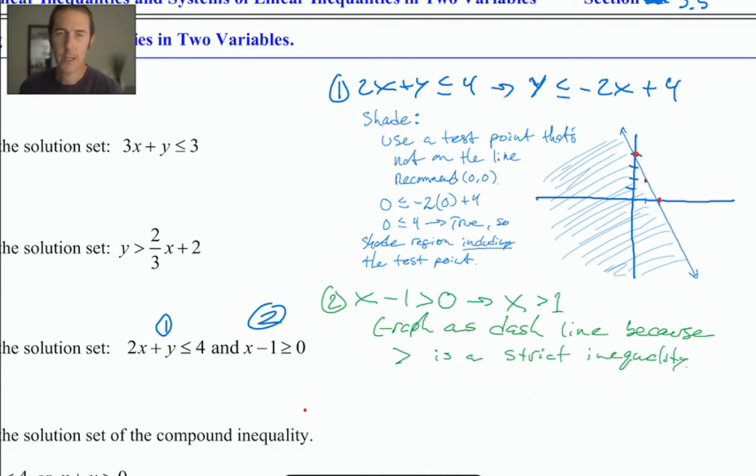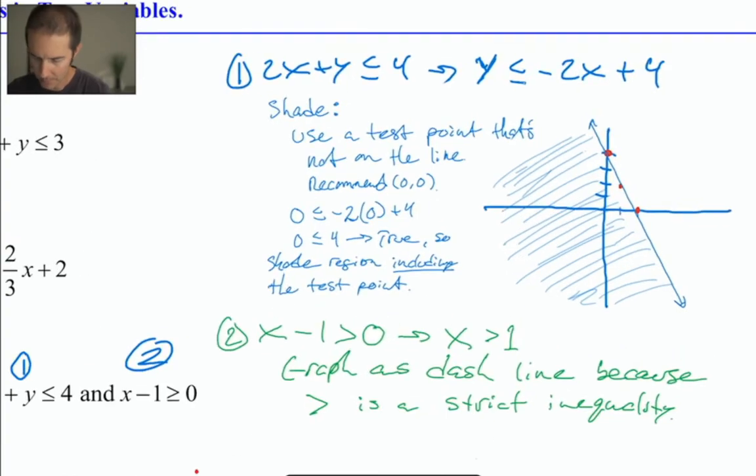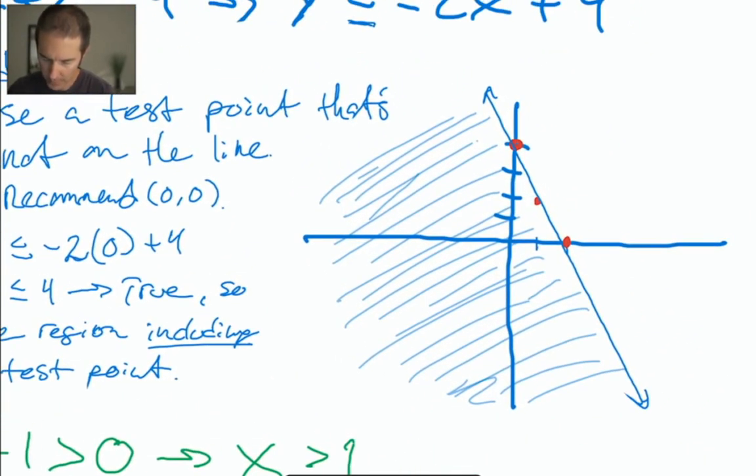What does that line look like? Remember that if it's an x equals line, then it's going to be a vertical line. We're graphing the collection of all of the points that have an x coordinate of one. So let's go into our graph. All the points that have x coordinates of one are like here and here and here. So there's the vertical line that I was looking for. Let's get it in there and let's have it be dashed, please. Dashed line.